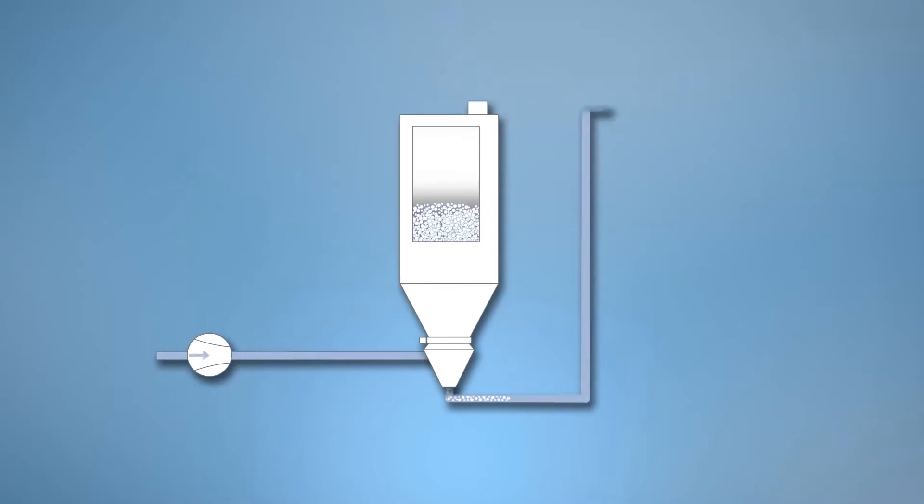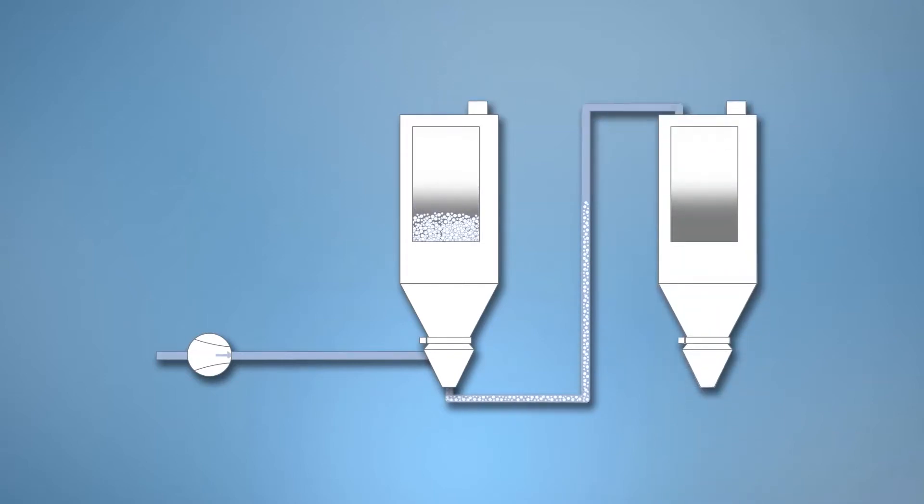Pneumatic conveying is a method to bring material from one silo to the other or from the storage tanks to the process.